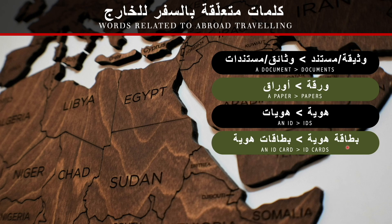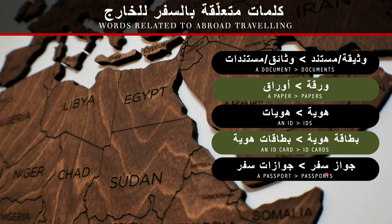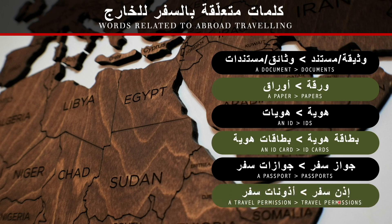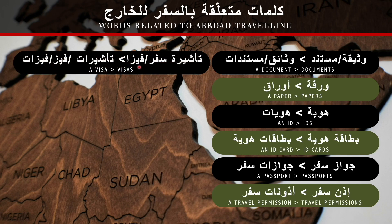In Saudi dialect: بطاقة هوية. In Egyptian: بطاقة هوية. In Levantine: بطاقة هوية. A passport: جواز سفر. Plural: جوازات سفر. A travel permission: إذن سفر. Plural: إذونات سفر. For a visa: تأشيرة السفر or فيزا. Plural of تأشيرة: تأشيرات. Plural of فيزا: فيزات.